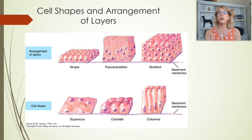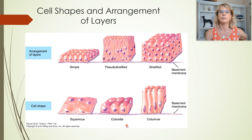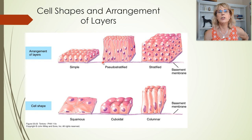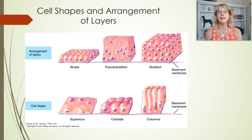There are three cell shapes: squamous are flat, columnar are tall and thin, and cuboidal. We also categorize epithelial tissues by the arrangement of layers. Simple epithelial tissues have one layer of cells, all with feet on basement membrane and a free surface. Stratified tissues have multiple layers, with the lowest level on basement membrane and the top level having the free surface. Pseudo-stratified tissues have all cells with feet on basement membrane, but only some have free surfaces at the top. Starting with the next video, we'll go over these in detail.